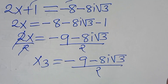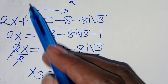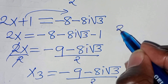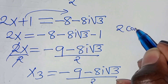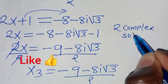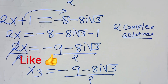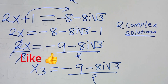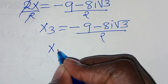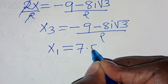So we have two complex solutions here: x2 and x3. These are two complex solutions for this algebra problem. This implies that we have only one real solution, which is x1, which is 7.5.